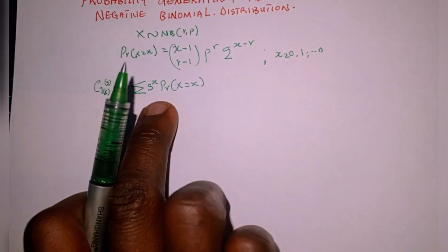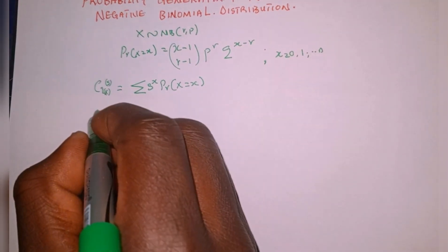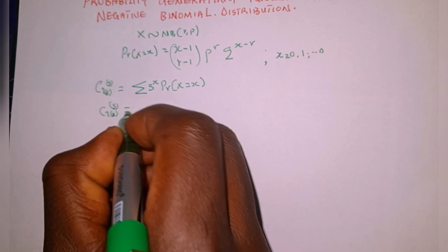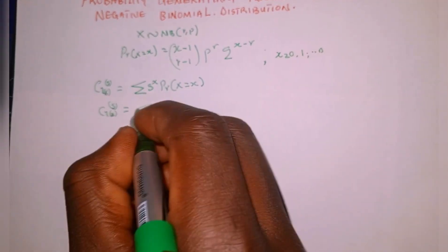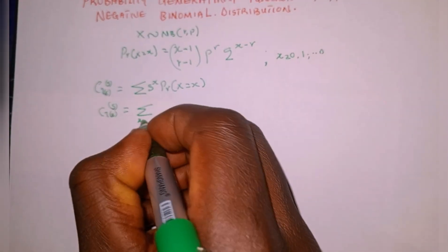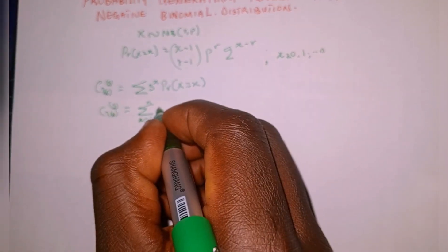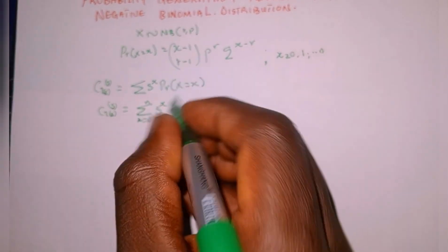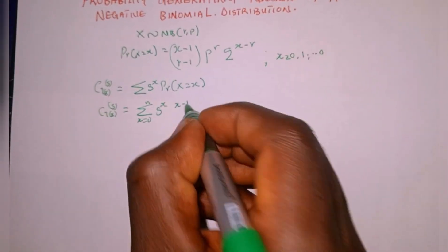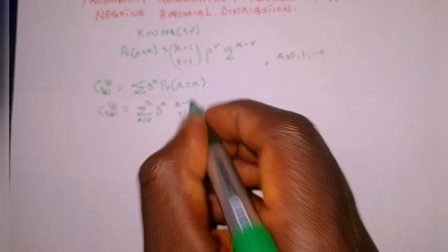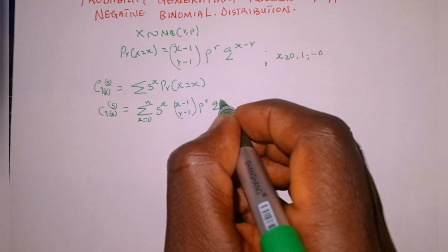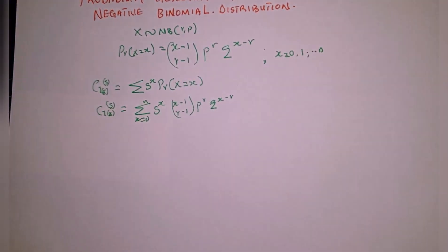The next thing we're going to do is to substitute into this formula. So we have the generating function G sub X of s equal to the summation as x ranges from zero to n of s raised to the power of x, multiplied by the probability function: x minus one combination r minus one, p raised to the power of r, q raised to the power of x minus r.